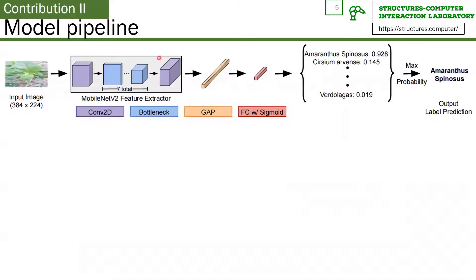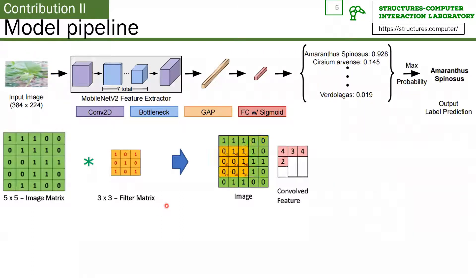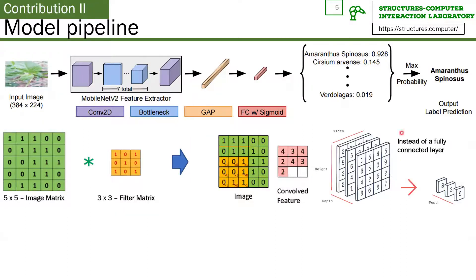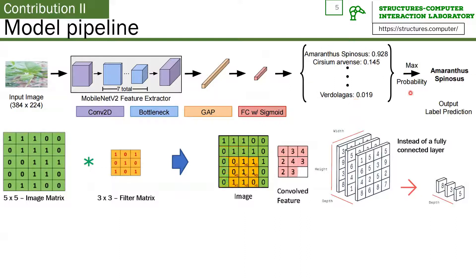We then use the pre-trained MobileNet V2 model, a convolutional neural network from ImageNet, as the feature extractor of our input image. We replace the last layer in MobileNet V2 with a global average pooling layer, and connect it to a fully connected layer that uses sigmoid as its activation function. In this way, the probabilities of each kind of weed are calculated independently, and based on our probability threshold, we can output the final result.